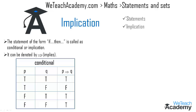Let me explain this concept with an example. We have the statement: if 3+5=8, then 1×0=0. Let us consider the first statement as p and the second as q. We observe that both p and q are true statements, and hence the truth value for p implies q is also true.